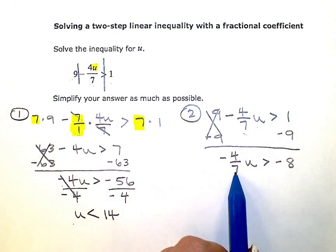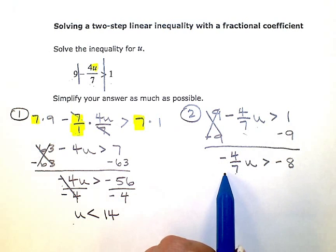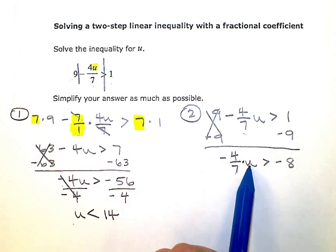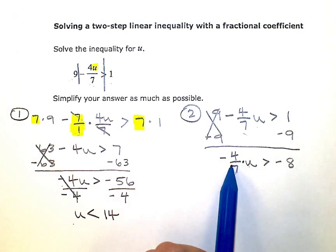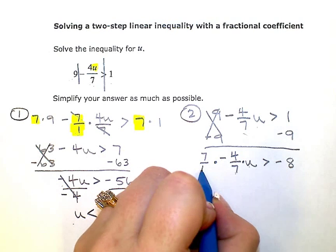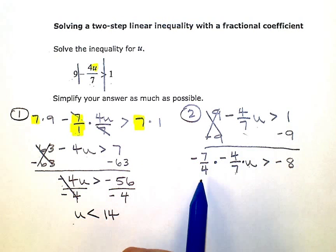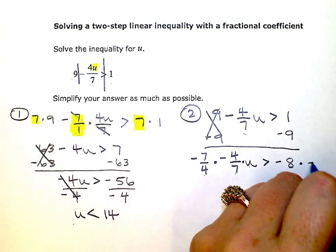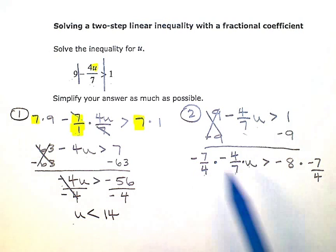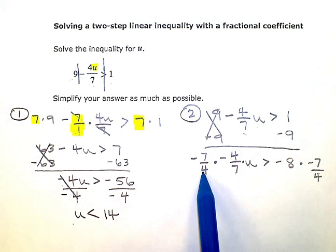Now I need to get rid of this coefficient, this negative four sevenths. If you remember, there's kind of a hidden multiplication sign right there or implied multiplication. So this is really negative four sevenths times u. The opposite would be to divide by negative four sevenths. But if you remember, when you divide fractions, that just means to multiply by the reciprocal. I'm going to flip it around and multiply by negative seven fourths. But if I multiply by negative seven fourths on the left, I have to also multiply by negative seven fourths on the right. Now I am multiplying by a negative number on both sides. So when I simplify, I'm going to flip my sign.